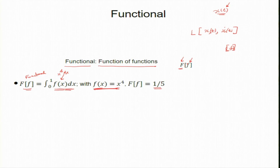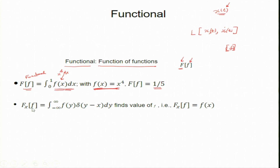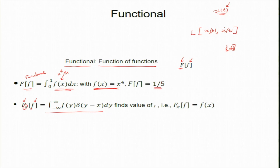This functional is accepting a function as an input. A second example: this functional takes a function and also an argument x. It is a machine which takes a function but also has a parameter — a knob — which is x, and it gives you the value of the function f at the point x. The definition of this functional is the integral of f(y) δ(y − x) dy. This is a filter function; it gives you the value at x, which you can change. The integral gives f(x) by the property of the delta function.